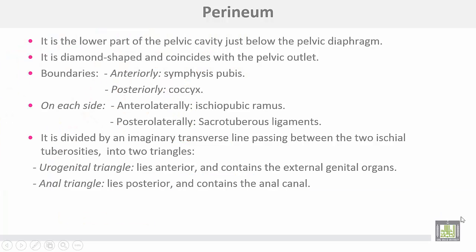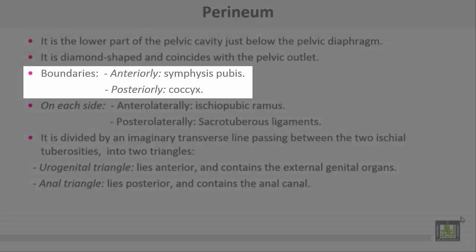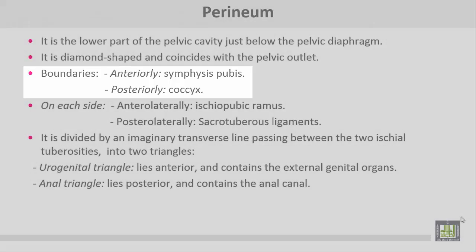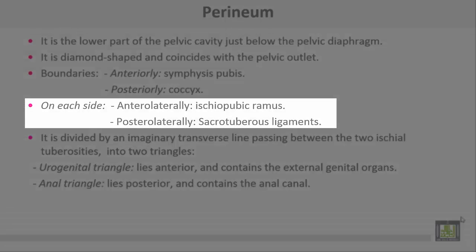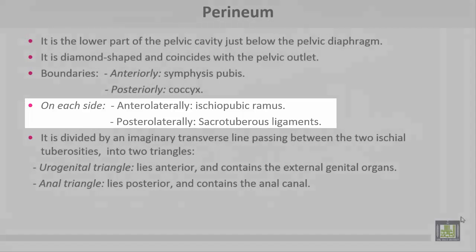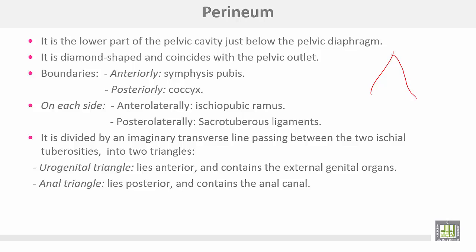Perineum — it is the lower part of the pelvic cavity just below the pelvic diaphragm. It is a diamond-shaped space coincident with the pelvic outlet. It is bounded anteriorly by the symphysis pubis, posteriorly by the coccyx, on each side anterolaterally by the ischiopubic ramus, and posterolaterally by the sacrotuberous ligament. It is divided by an imaginary line passing between the two ischial tuberosities into two triangles: the urogenital triangle anteriorly, containing the external genital organs, and the anal triangle posteriorly, containing the anal canal.